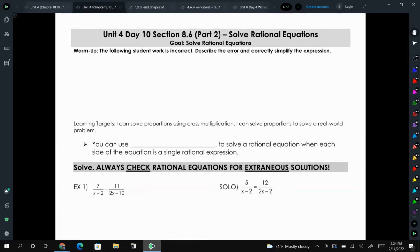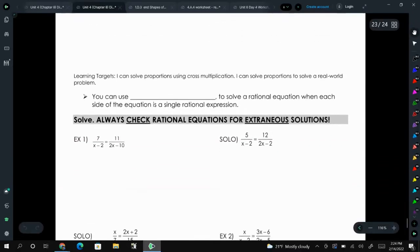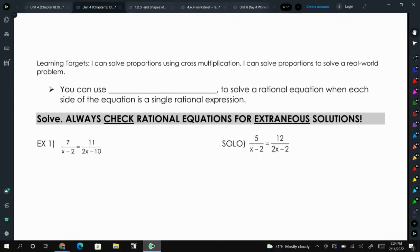The other day, we solved rational equations by finding common denominators and multiplying both sides by those common denominators. Today, we're going to talk about ways you can tell when you could do cross-multiply instead, and you will probably find this much easier.